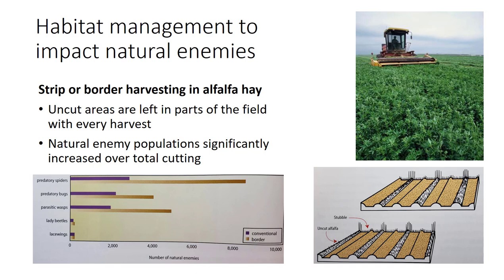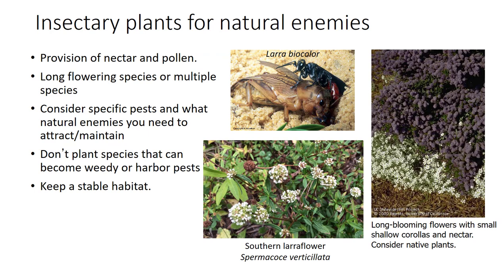In addition, border harvesting also markedly reduces lygus bug migration into cotton and other crops. Similar benefits can be obtained by border harvesting or staggering the cutting of alfalfa hay fields that are nearby or adjacent to each other. The table compares the abundance of natural enemy populations in border-harvested alfalfa and conventional alfalfa.